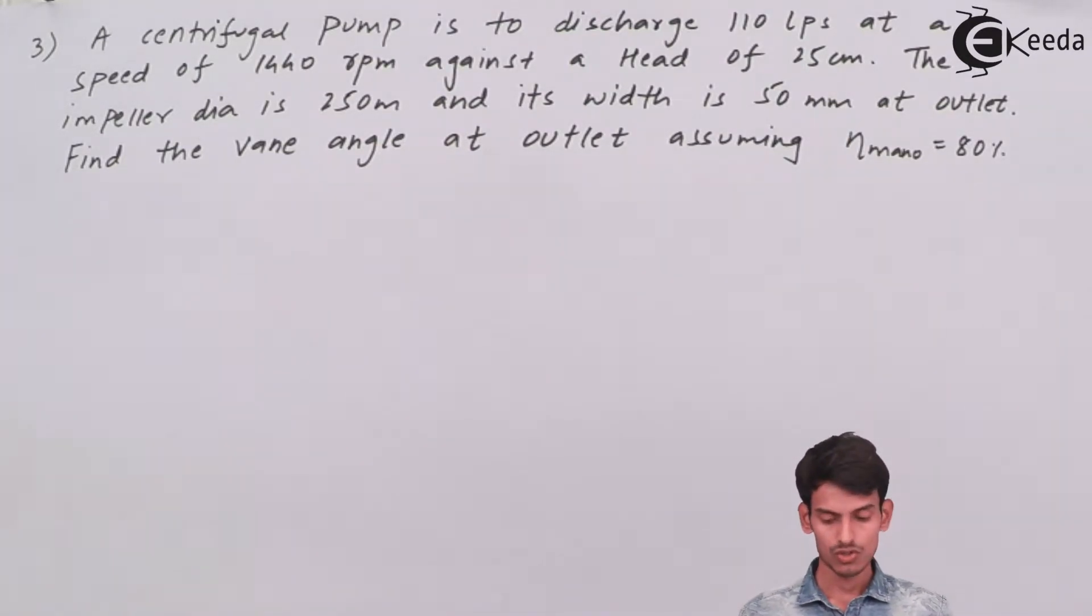The data is given. First of all, let me write down the data and concentrate on what you need to find. The vane angle has to be found - that is, the value of phi at the outlet side. Let's write down the given data and see how we can calculate the value of phi.